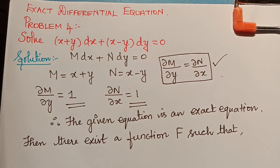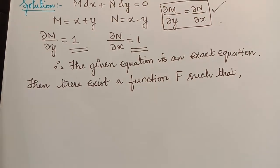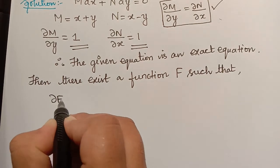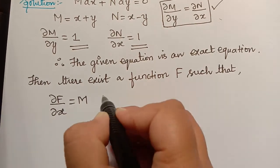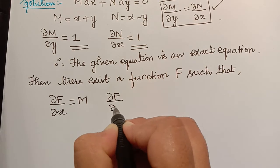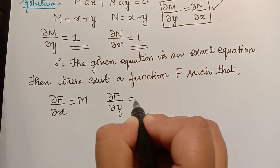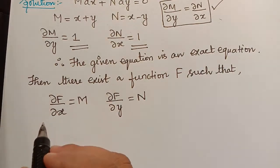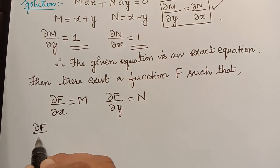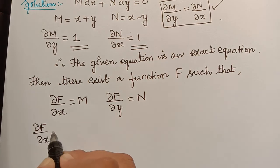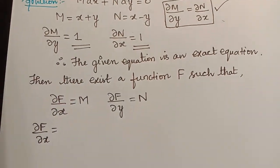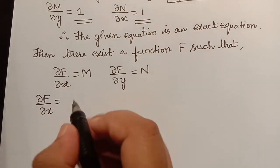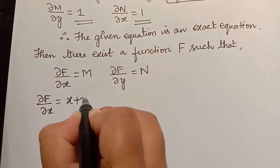Since this is an exact equation, there exists a function F such that ∂F/∂x = M and ∂F/∂y = N. From ∂F/∂x = M, and since M is x + y, we substitute to get ∂F/∂x = x + y.